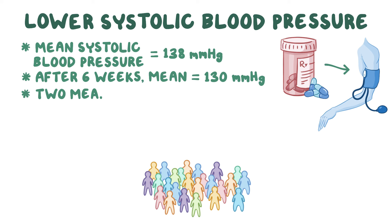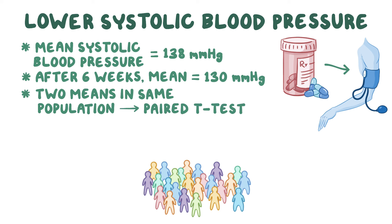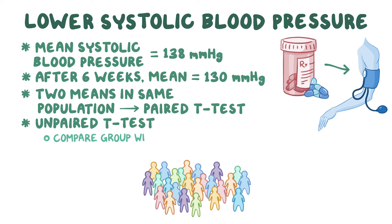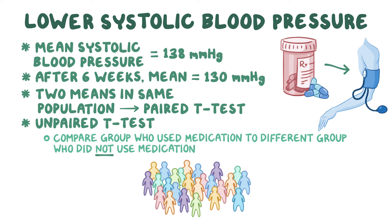Specifically, since the two means were measured in the same population before and after the treatment, we could use a paired t-test. This is different than an unpaired t-test, or a two-sample t-test, which is used to compare two groups of individuals. For example, an unpaired t-test could compare the systolic blood pressure measurements of a group of 25 people who used the medication for 6 weeks to a group of 25 people who did not use the medication for 6 weeks.